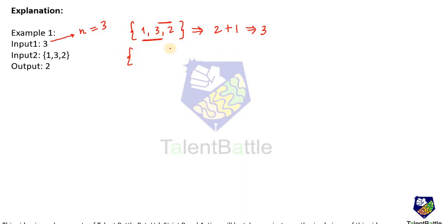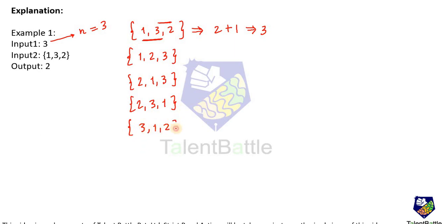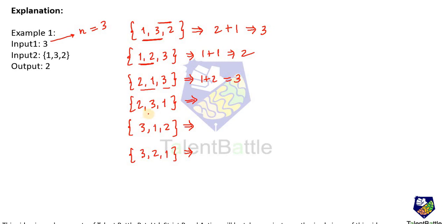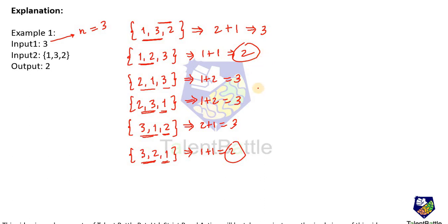Other possible arrangements include [1, 2, 3], [2, 1, 3], [2, 3, 1], [3, 1, 2], and [3, 2, 1]. Checking the summation of absolute differences of adjacent elements: [1,2,3] gives 1+1=2; [2,1,3] gives 1+2=3; [2,3,1] gives 1+2=3; [3,1,2] gives 2+1=3; and [3,2,1] gives 1+1=2. The minimum absolute difference sum we get is 2, so the minimum penalty is 2 — that is why the output is 2.